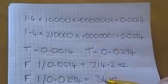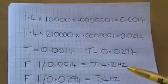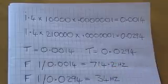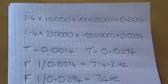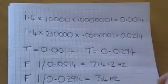So maximum resistance we've got 34 Hertz, minimum 714.2. And if I remember rightly when I measured the circuit for the documents, I think it was 32 Hertz and 713 so they're quite close.